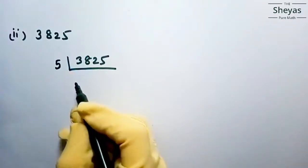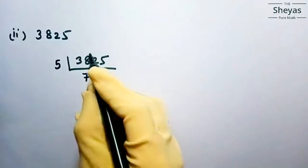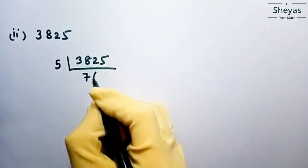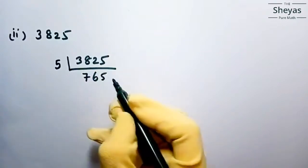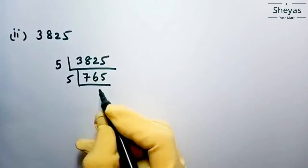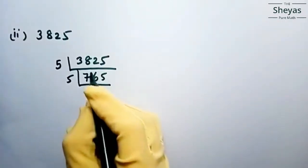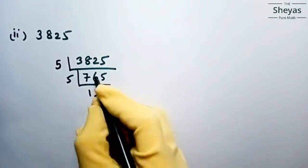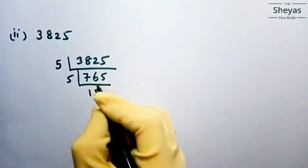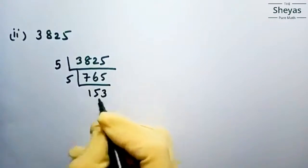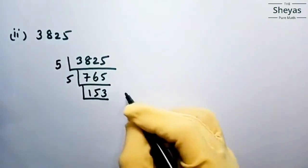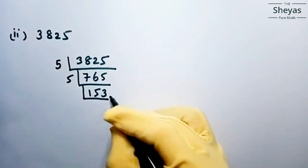So here I am starting with 5. Dividing 3825 by 5 gives 765. Dividing 765 by 5 gives 153. Now check 153: it doesn't end in 5 or 0, so it is not divisible by 5; it is not even, so not divisible by 2.